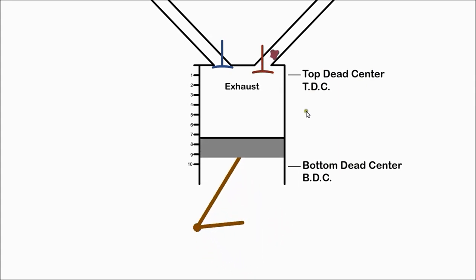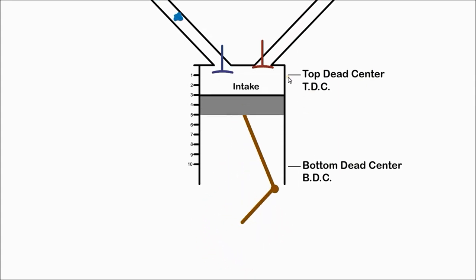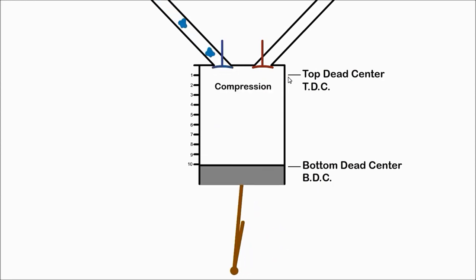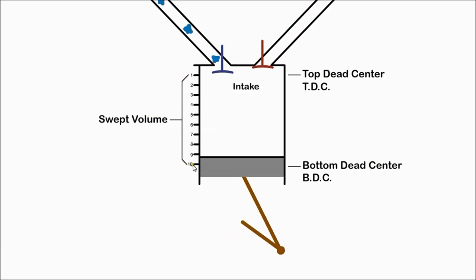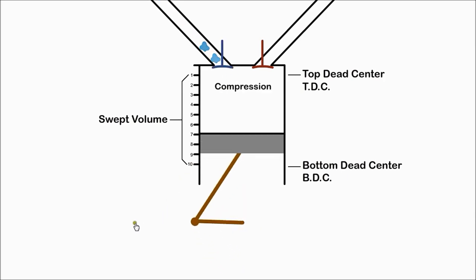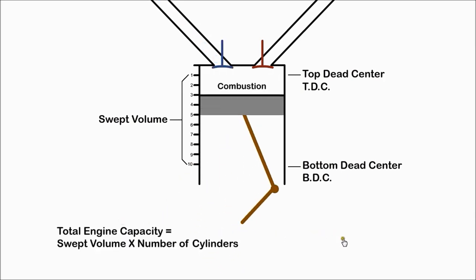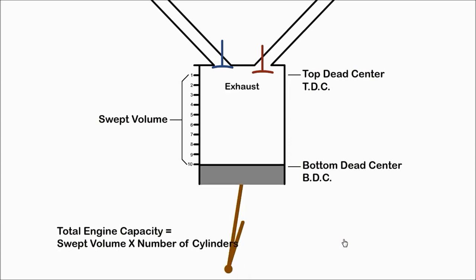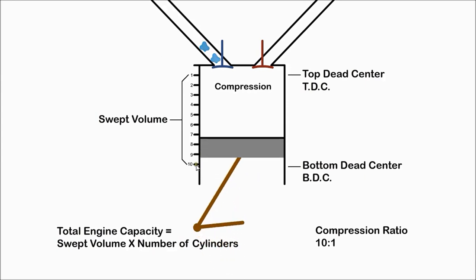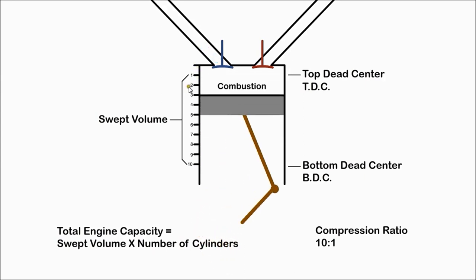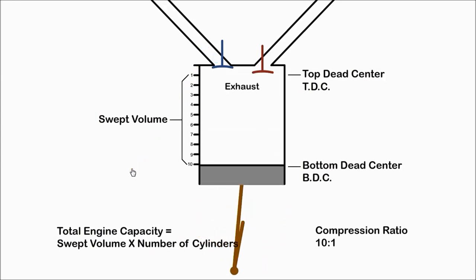The top position of the piston is called top dead center (TDC) and the bottom position is called bottom dead center (BDC), while the volume between the two is called the swept volume. The total engine capacity is the swept volume multiplied by the number of cylinders. For this engine the compression ratio is 10 to 1. A diesel engine would be higher at perhaps 20 to 1.